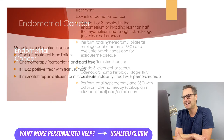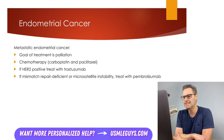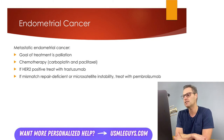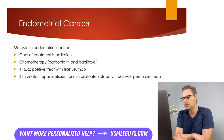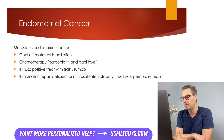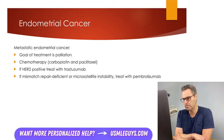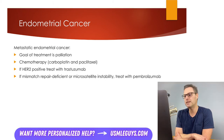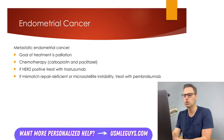Finally, we have metastatic endometrial cancer — cancer that has traveled to distant organs. In this case, the goal of treatment is palliative, not curative. Palliative chemotherapy is used and will usually be carboplatin and paclitaxel. If the patient is HER2 positive, they could also be treated with trastuzumab. If genetic testing identifies mismatch repair deficiency or microsatellite instability, these patients could also be treated with pembrolizumab.